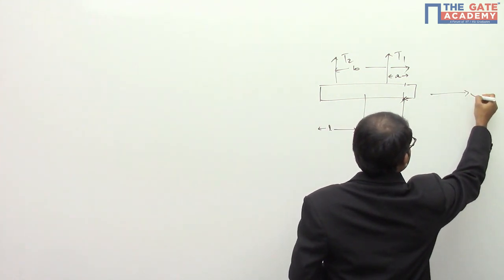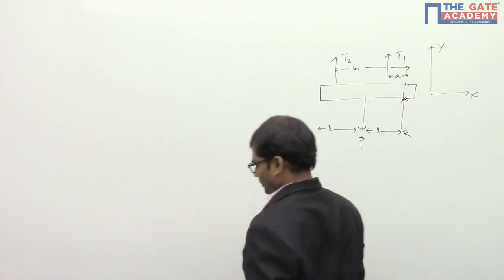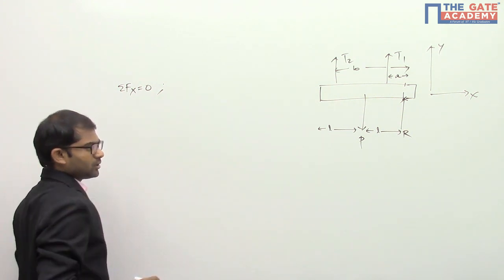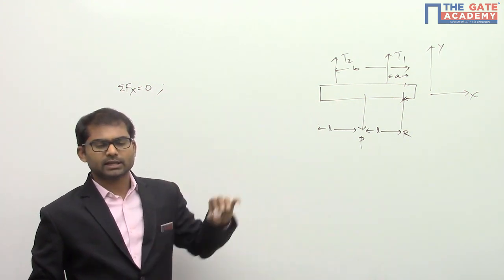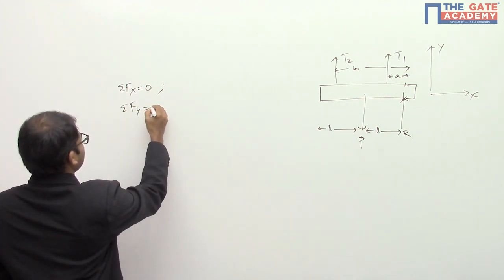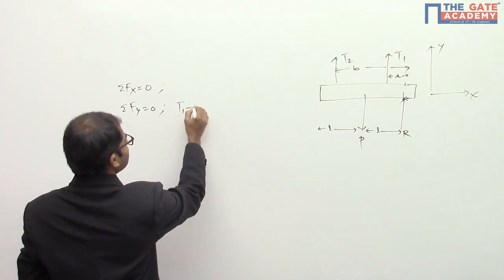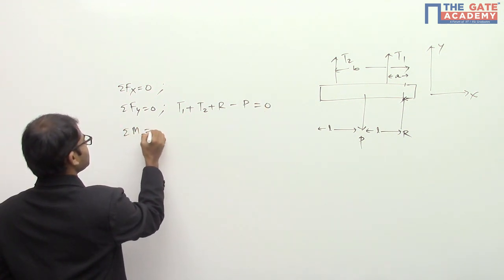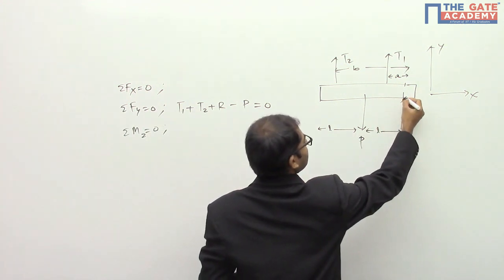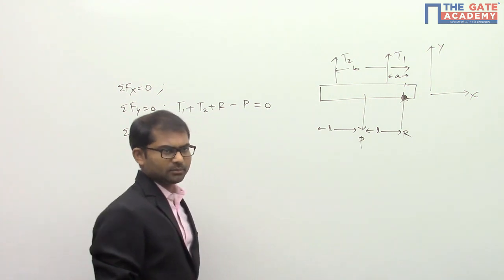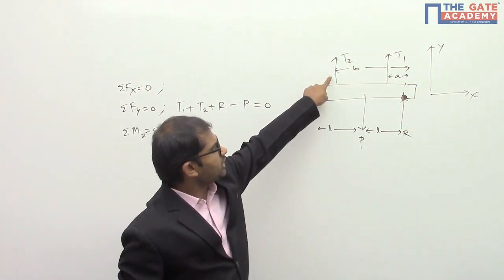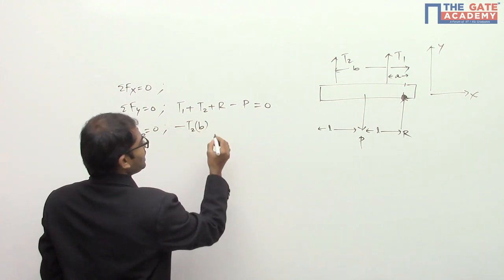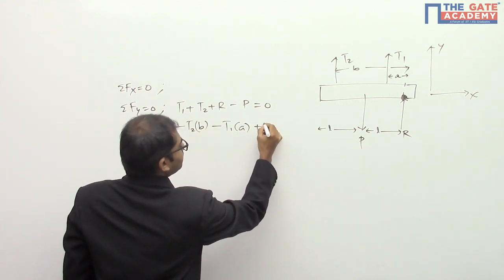Taking a coordinate system with x and y axes and writing equilibrium equations: sigma Fx = 0 gives nothing since there is no force in the x direction. Sigma Fy = 0 gives T1 + T2 + R − P = 0. For sigma Mz = 0, taking moments about point A: −T2·b − T1·a + P·L = 0.